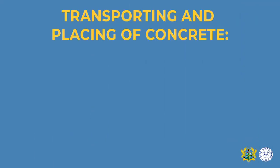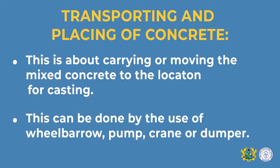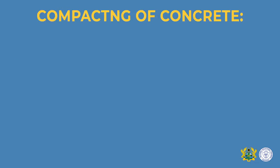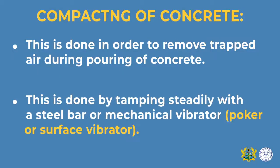Transporting concrete involves moving it from where it is mixed to the location where it is going to be cast, using a wheelbarrow, pump, crane, or dumper. Compaction of concrete is done to remove trapped air that formed inside the mixture during pouring. All air pockets are removed using a mechanical vibrator known as POCA, a surface vibrator, or an internal vibrator.